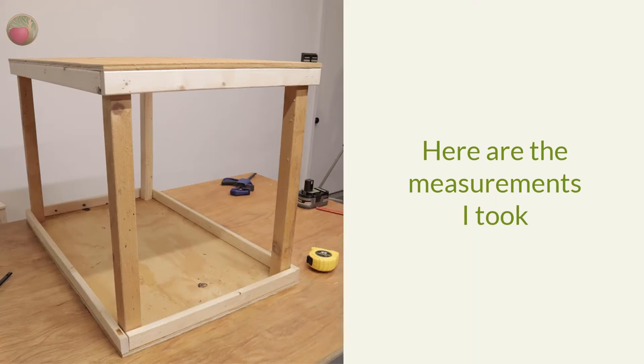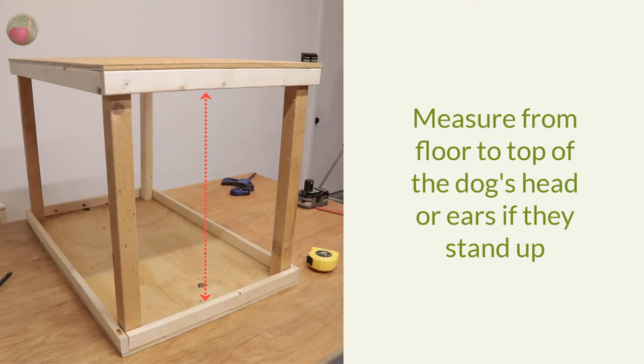Now following are the measurements I took and how they corresponded to the dimensions of the crate. Measure from the floor to the top of your dog's head or top of the ears if they stand up with dogs standing up straight. This should be the inside edges of your one by two rails, plus maybe an inch or so.